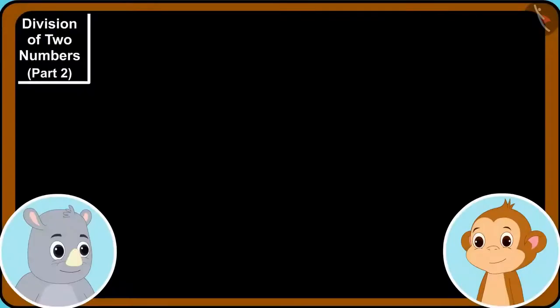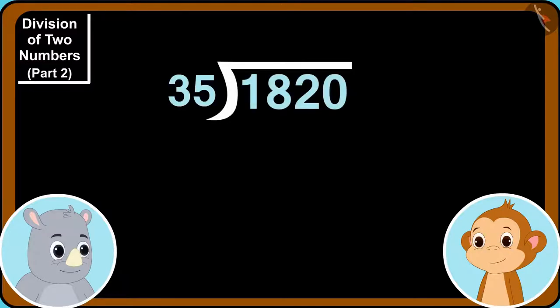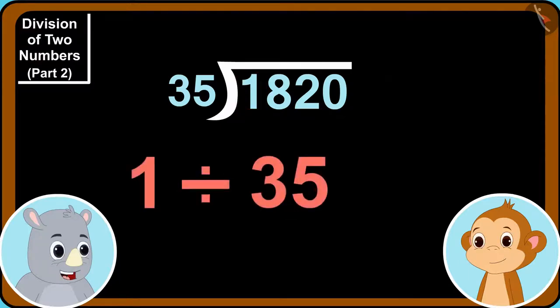Gaggoo wrote these numbers on paper like this. Look, Babban, here we are dividing 1,820 by 35. First, we start with the number written in the 1,000th place. Can we divide 1 by 35?